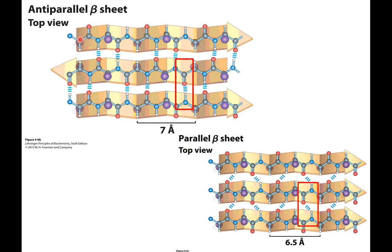We can form an anti-parallel beta sheet, where the strands run in opposite directions, forming hydrogen bonds between two different beta sheets. In parallel beta sheets, the strands go the same direction, still hydrogen bonding between adjacent sheets. The anti-parallel is more stable than the parallel because the anti-parallel has hydrogen bonds in a much more linear format, whereas in the parallel, the hydrogen bonds are a little crooked.